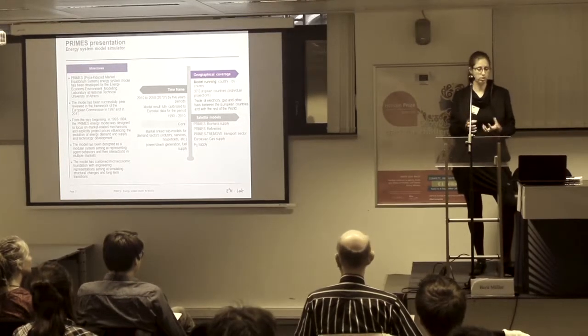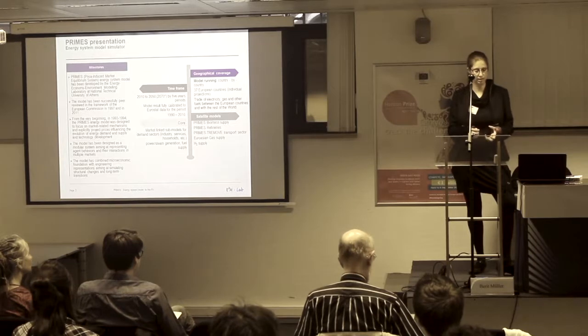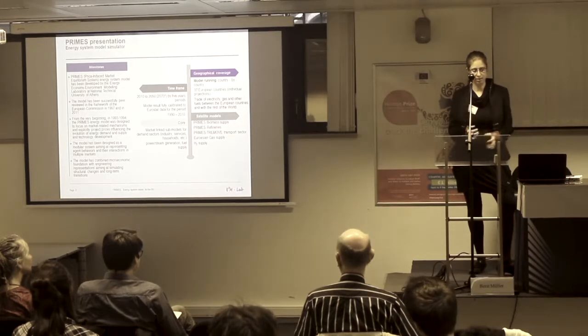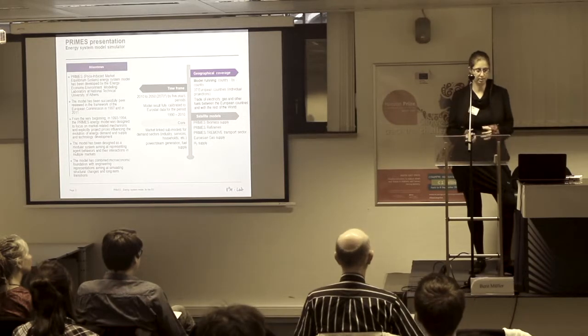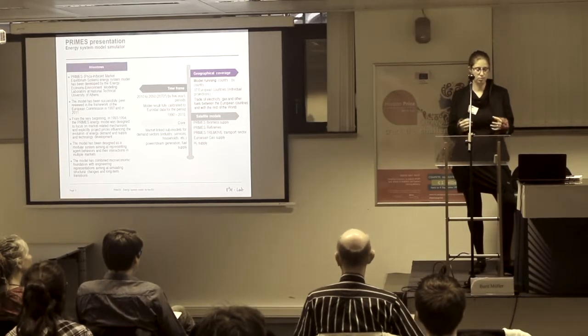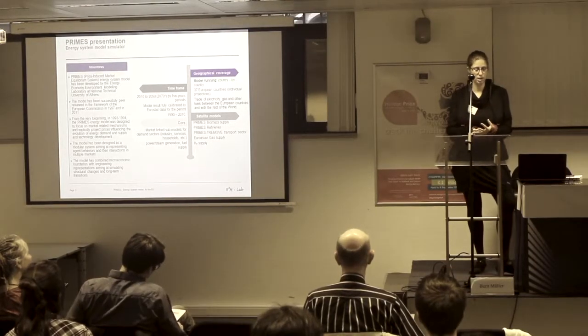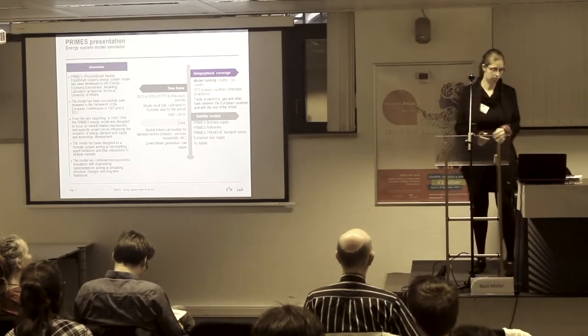The core of the model are the market-linked sub-models of the demand side, so industry, services and households, with the power steam generation and fuel supply system. The satellite models are the PRIMES biomass supply, the PRIMES refinery, the PRIMES-TREMOVE transport model, which runs both in the core and as an independent model. Then we also have a Eurasian gas supply model and a hydrogen supply model.